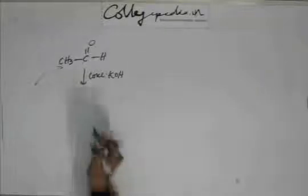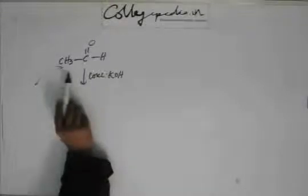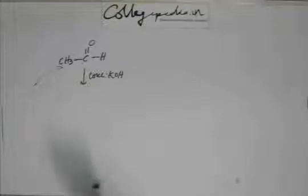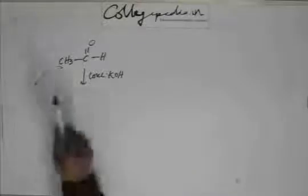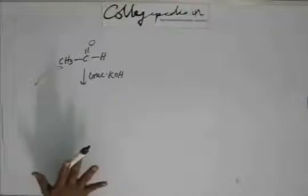And in that, what we did was this base used to go and abstract a hydrogen from here and this C- used to go and attack unreacted molecule. So that whole story we know and that requires alpha hydrogen. If there is a alpha hydrogen, then Cannizzaro reaction will not occur. Rather, aldol condensation will occur. So this compound ethanal is not going to show Cannizzaro reaction.